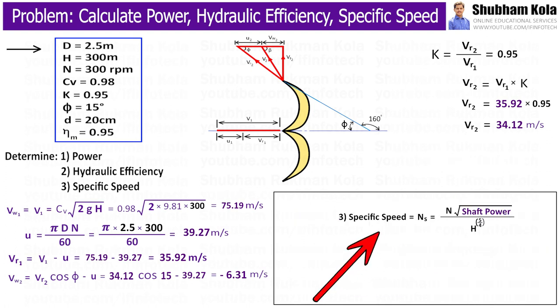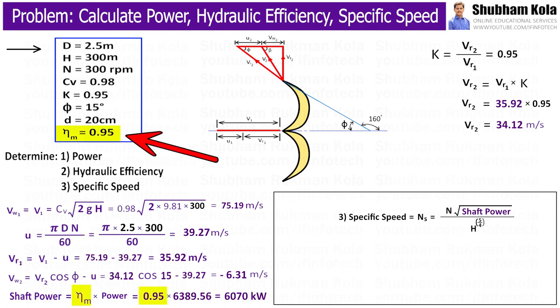To determine specific speed, we have formula that is speed capital N multiplied with under root of shaft power, and whole term divided by net head capital H raised to 5 by 4, where shaft power equal to mechanical efficiency multiplied by power developed, and mechanical efficiency is given in the problem.